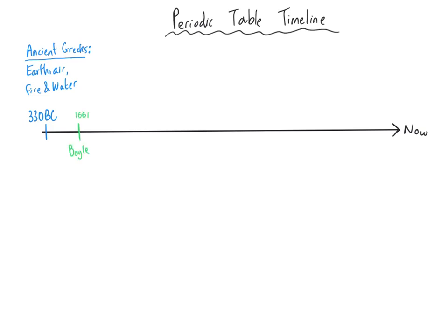These ideas persisted for a very, very long time — nearly 2000 years — until the time of a chemist called Robert Boyle. Robert Boyle is considered to be the first modern chemist. He decided that elements were substances that could not be broken down, and that was really the first new idea since the ancient Greeks.